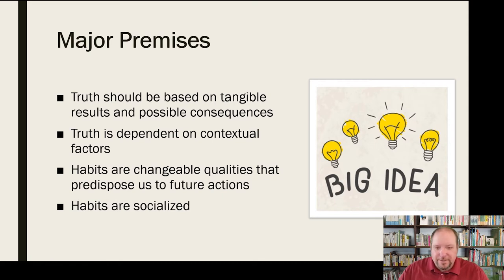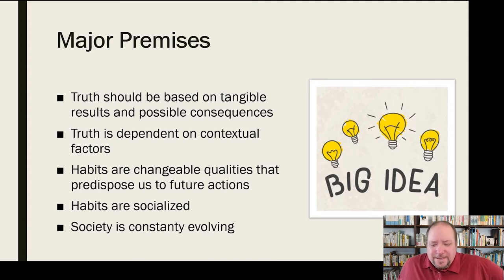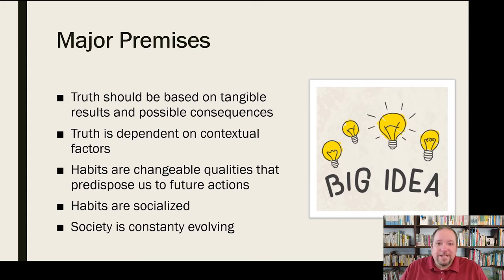Habits are also socialized, changeable qualities that predispose us to future actions — we can predict what somebody will do based on previous habits. Society is constantly evolving, which is why it's important to place things in context and time. We are not the same today as we were 15 or 20 years ago as a society. Our expectations of what is good and bad are constantly evolving, and society is a constantly evolving system.